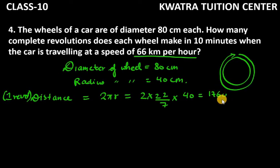So, if we solve this, you will get 1760 over 7 cm. Right? So, distance covered by a wheel in one revolution is 1760 over 7 cm.